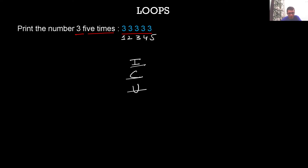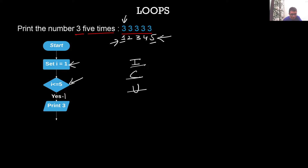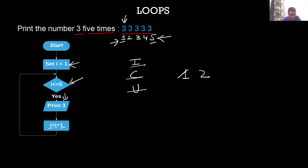First, perform the initialization. We have to print number 3 five times, so I'll count from one to five — I'll initialize variable i = 1. My condition is i should be less than or equal to 5. Within the loop, I'll first print the number 3, then update the value of i: i = i + 1. Then go back; if the condition is false, simply stop.